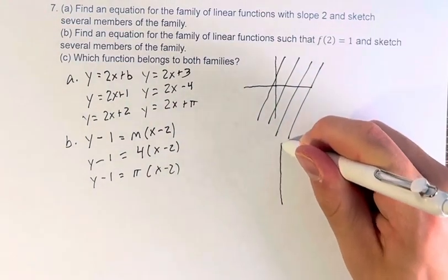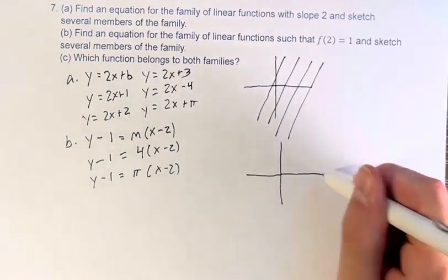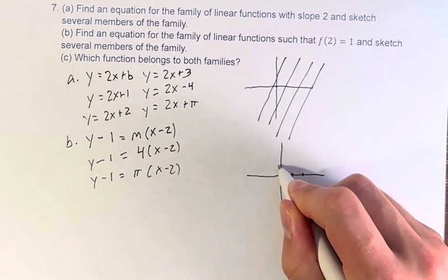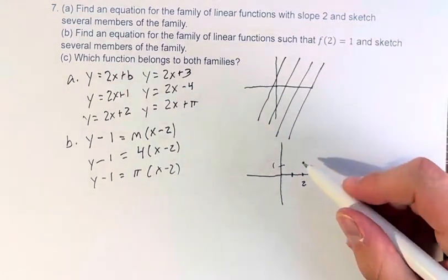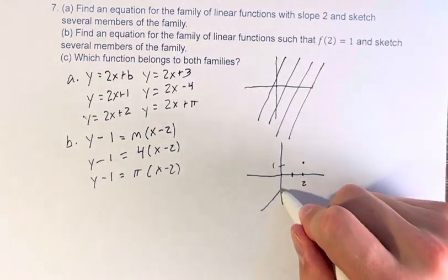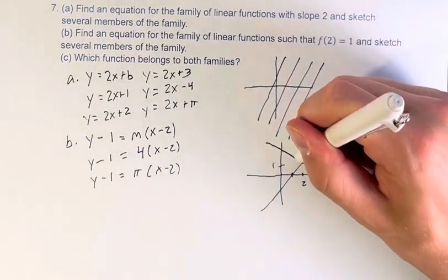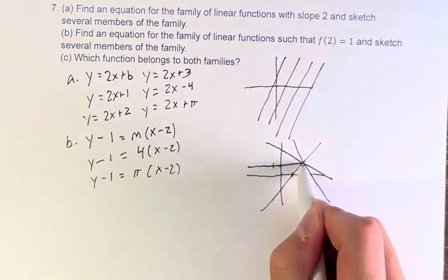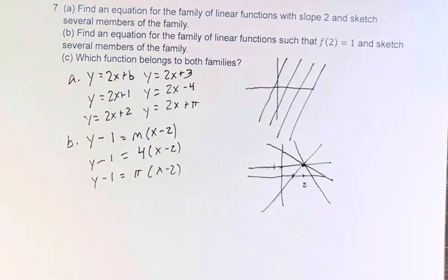And when we graph this, we have the point 2, 1. All of these functions go through this point. They just have different slopes, but they all meet in a singular location.